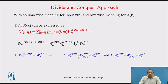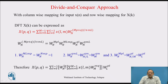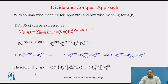We can now write X(p, q) as a summation over l = 0 to L−1 of W_N^(lq) multiplied by the inner summation over m = 0 to M−1 of x(l, m)·W_M^(mq), the whole multiplied by W_L^(pl). This simplified expression shows how the N-point DFT computation can be organized using these 2D array terms.